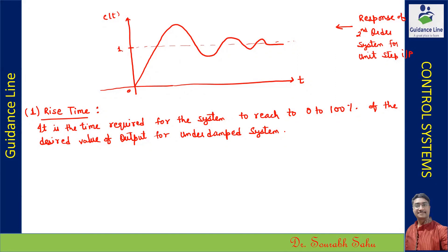One represents the response when it reaches a hundred percent — that is the desired value for an under-damped system. When we have an under-damped system, this is the definition of rise time. But for an over-damped system, rise time is when the system response reaches from ten to ninety percent.